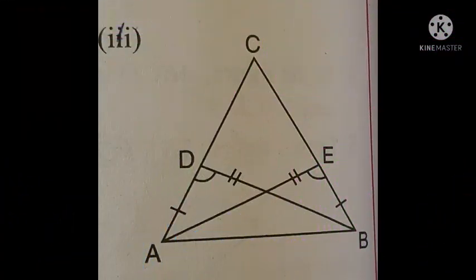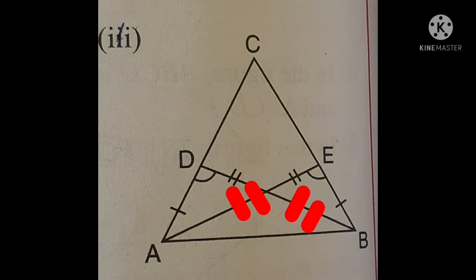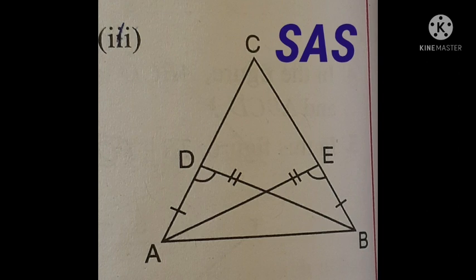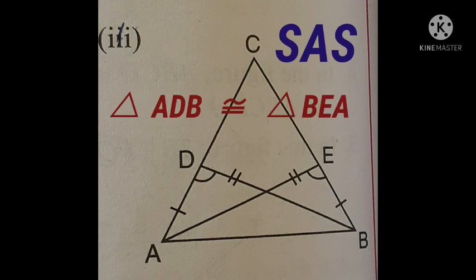Our first question is: name the congruent triangles and state the congruency condition. Here you see in triangle ADB and in triangle AEB, AD equal to BE, AE equal to BD, and angle ADB equal to angle BEA. So as per the criteria of SAS — that means two sides are equal and one included angle is equal — triangle ADB is congruent to triangle BEA.